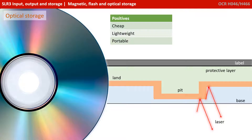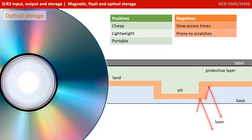This means the data can be written many times. There are many positives to optical storage media, including being cheap to produce, lightweight, and highly portable. DVDs store more data than CDs because the pits and lands are smaller and closer together as the laser technology has increased the precision. Data is read and written from the inside of the disk to the outside in a spiral, which can make them slow devices for accessing data. Optical media is also prone to scratches.